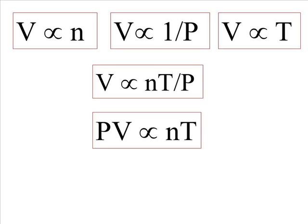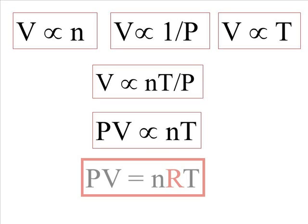That gives us PV is proportional to number of moles times temperature. And finally, the ideal gas law: PV is equivalent to nRT, so number of moles times temperature times the R value. The R value is the ideal gas law constant. We will certainly discuss this more in class and you will actually determine the gas law constant experimentally.